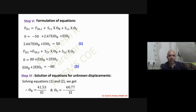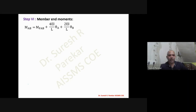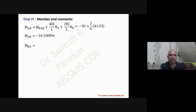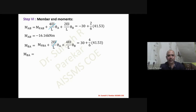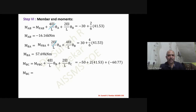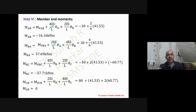With θB and θC known, we apply the slope deflection equations to find final moments: M_AB = minus 16.616 kN·m, M_BA = 57.69 kN·m, M_BC = minus 57.71 kN·m. Since C is a roller/simple support, the final moment at C must be zero, which is confirmed.